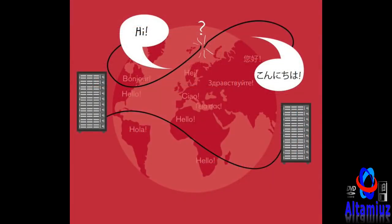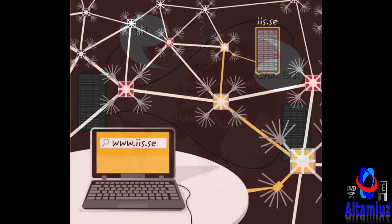The large computers and servers can talk with each other, but they do not speak in a normal language like English. Instead, they send numbers and codes to each other. The good thing about this is that a computer in Sweden can understand a computer in Japan, even though the people speak different languages. If you want to check out a website, a kind of question is sent from your computer to a server on the internet that answers. The server that answers can be located anywhere in the world. Then the website is sent to your computer, and you can see it and click on it.